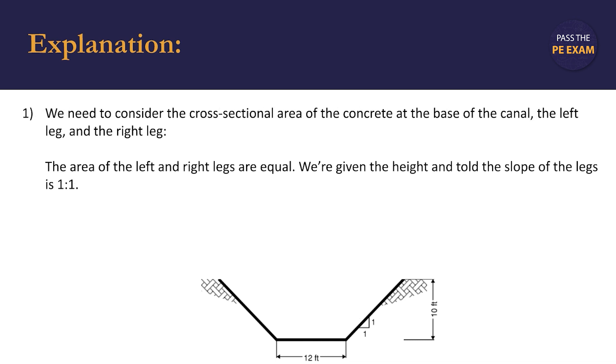So first, our cross-sectional area of the concrete, that's the base of the canal, the left leg, and the right leg. The area of the left and right legs are equal. We're shown on the schematic that the canal is symmetrical and we're given the height and told the slope of the legs is one to one.